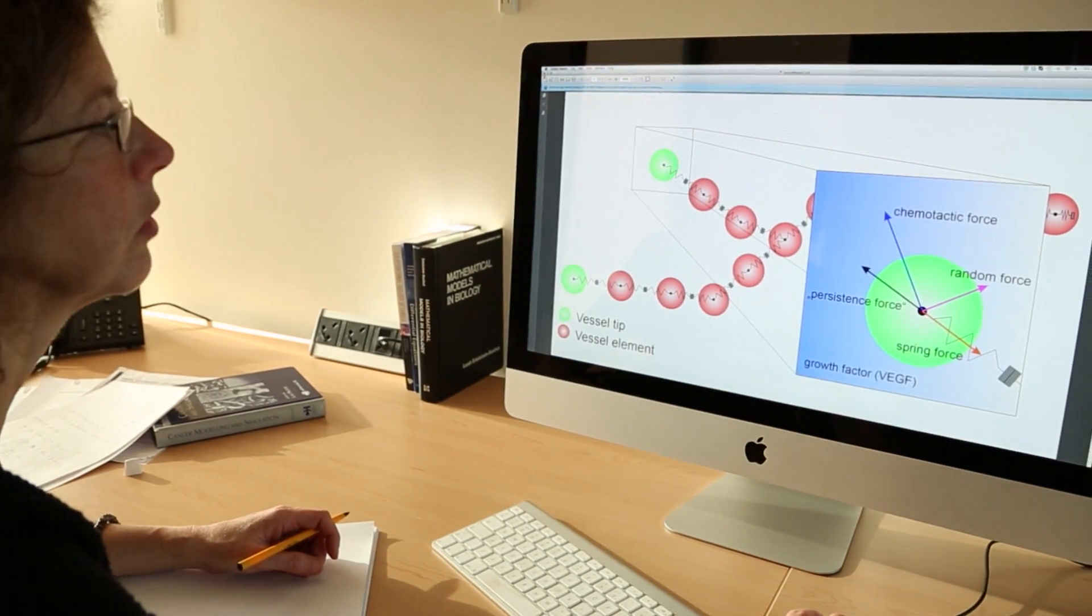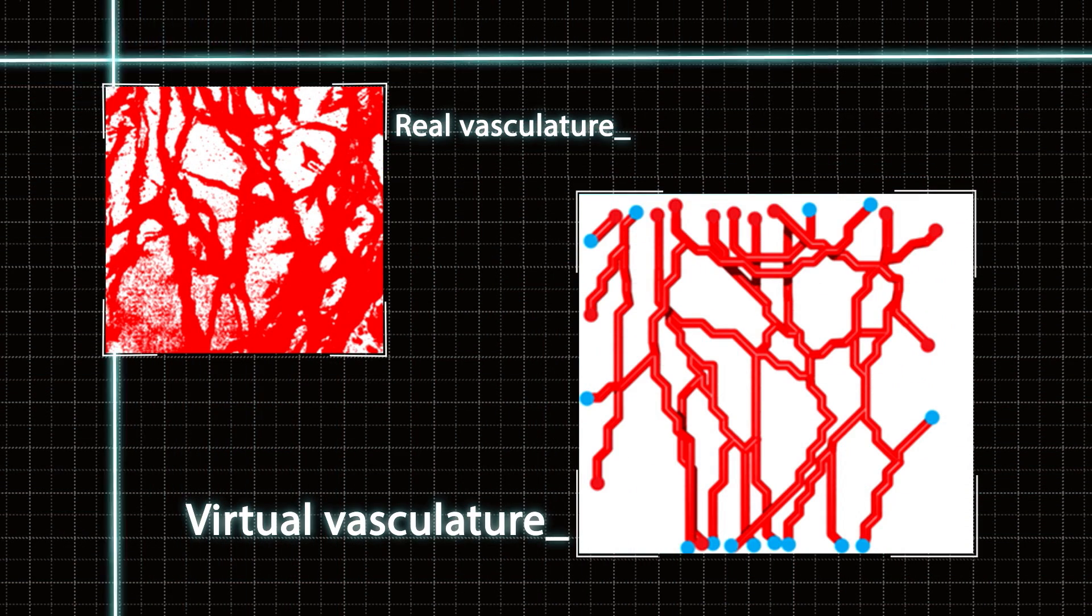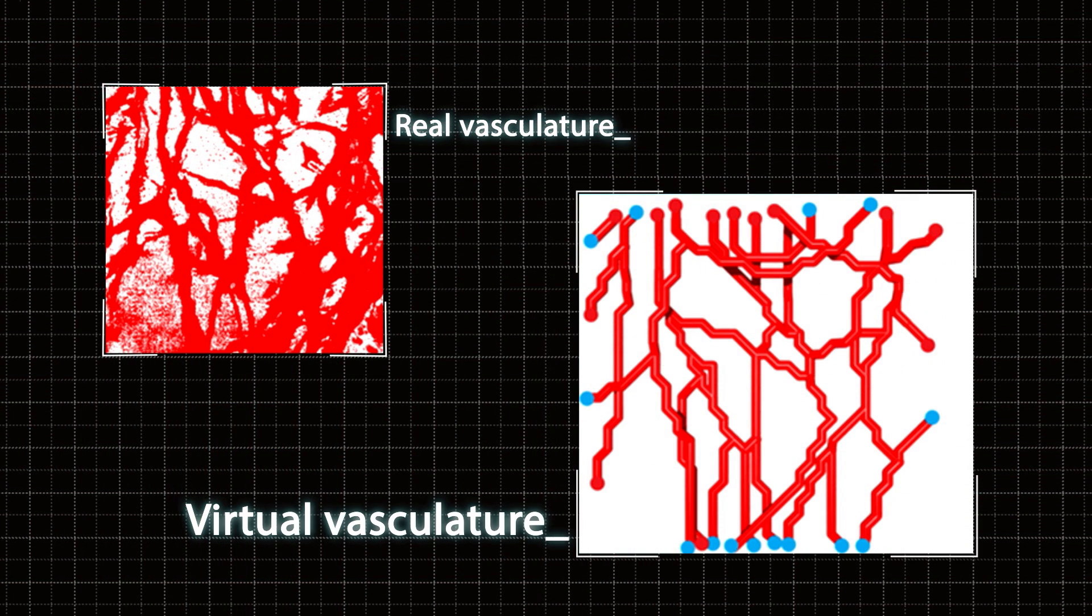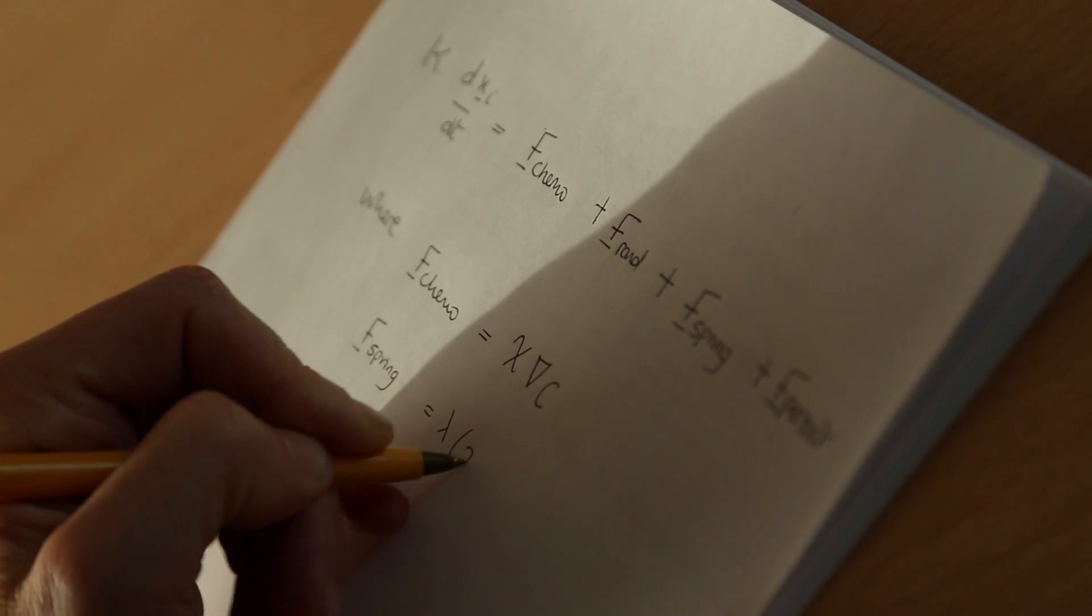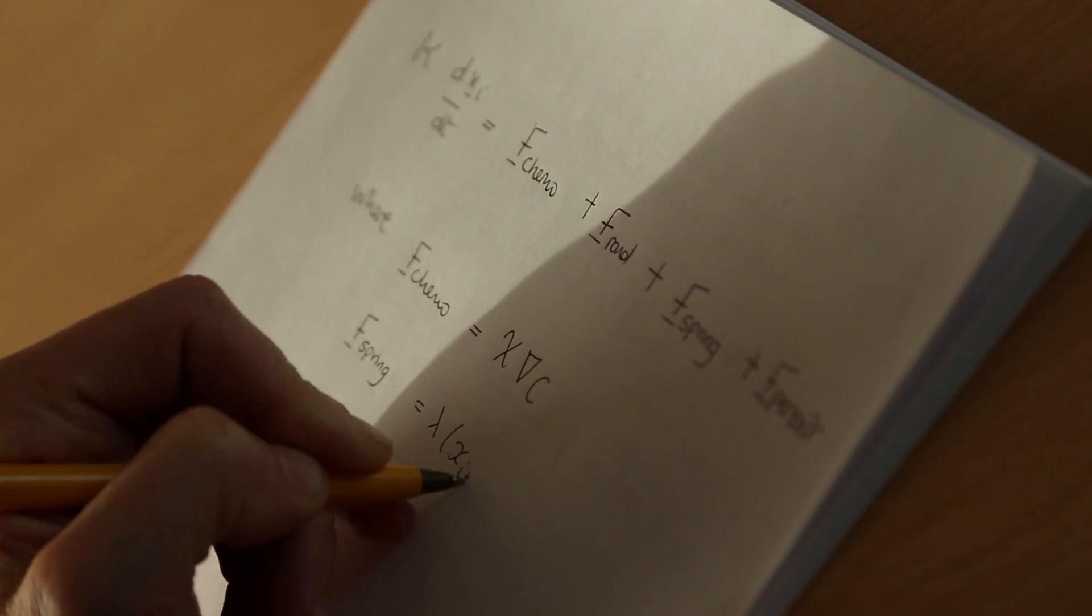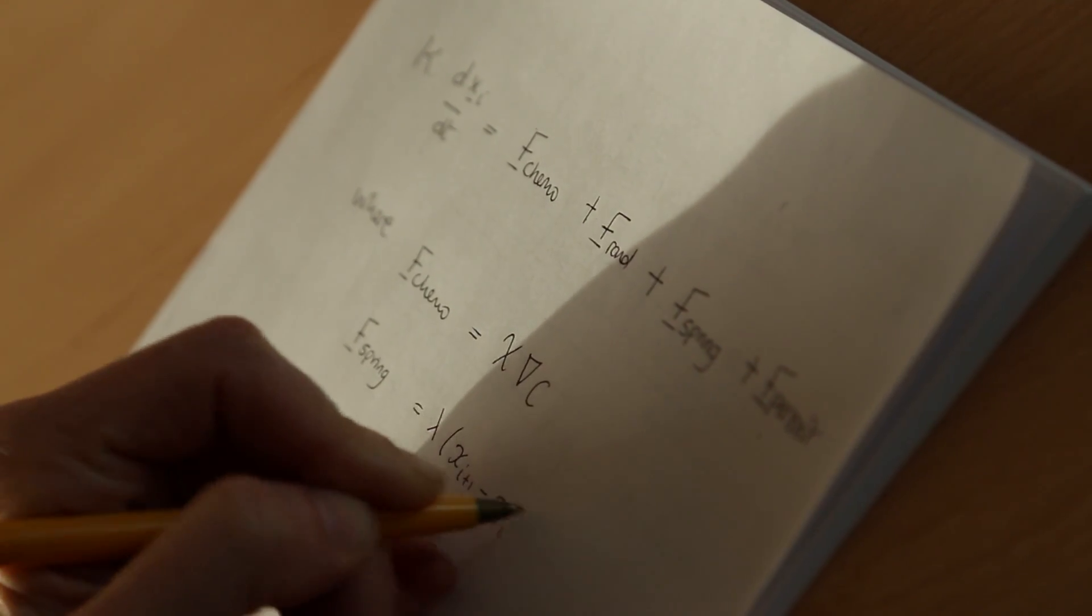One of the things we're particularly interested in doing with this model is as we vary the sensitivity of the cells to the signals and forces that they're experiencing, how does that change the network that forms? Can we identify parameter values that give us networks that look like healthy tissue? As we change parameters, how can we arrive at more irregular networks that are much more characteristic of the sorts of vascular networks we associate with tumours?